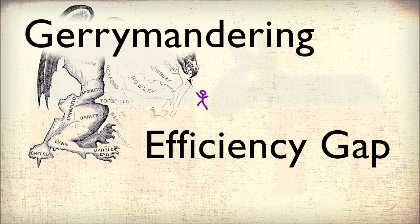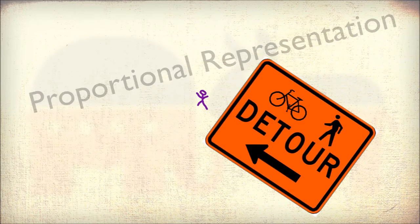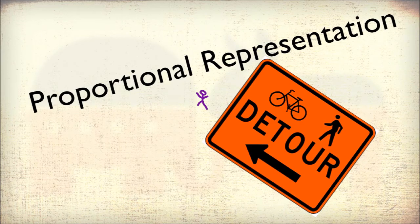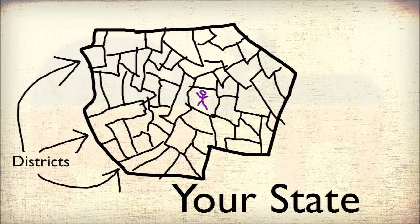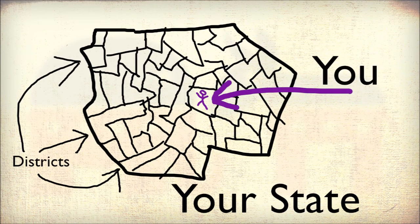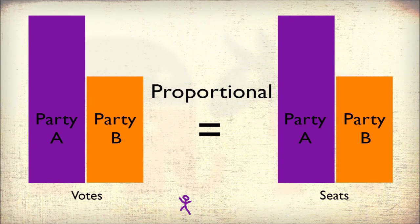To understand the efficiency gap, let's take a detour into what is known as proportional representation. Say this is your state and these are the districts in your state. You vote for your state house member while others vote for their state house members. Proportional representation is the idea that if your party wins a certain percentage of the vote in your state, to be fair, your party should have a proportionate number of seats in your state house.